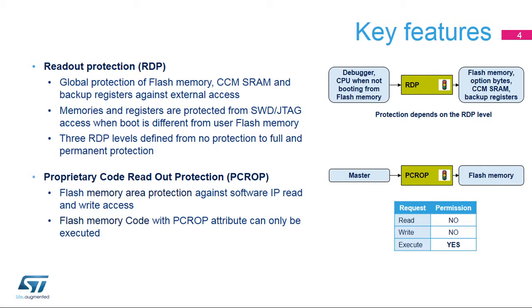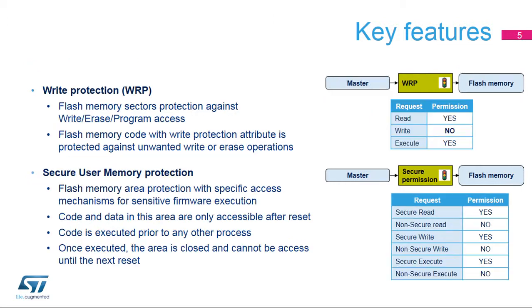PCROP is a memory access protection against code dumping, used to protect the intellectual property of the code. The protected firmware remains executable, but read and write access performed by the CPU executing malicious third-party code, such as a Trojan Horse, are prohibited. The write protection mechanism prevents accidental or malicious write and erase operations. Secure user memory is a flash memory area with a specific protection mechanism to ensure the safe execution of sensitive firmware, in addition to code and data protection.